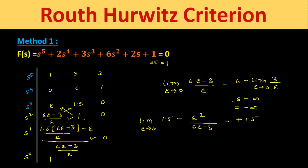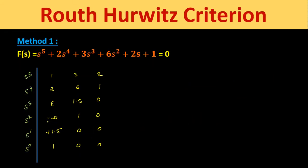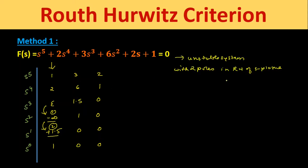Reconstructing the Routh array with these limit values, the first column reads: 1, 2, ε (positive), −∞, +1.5, 1. There are two sign changes: from +ε to −∞, and from −∞ to +1.5. Therefore this system is unstable, and two poles lie in the right half of the s-plane.